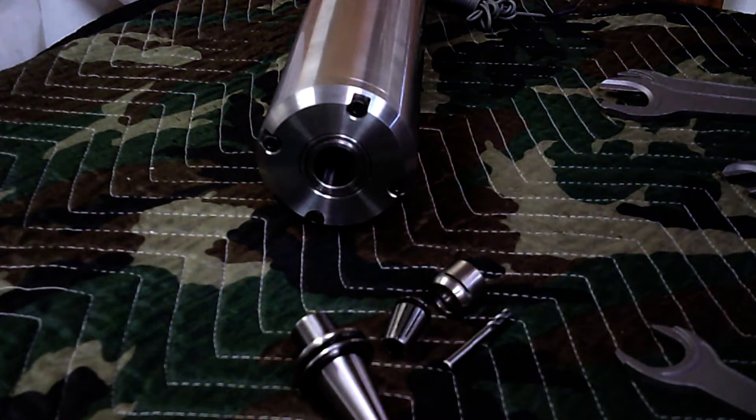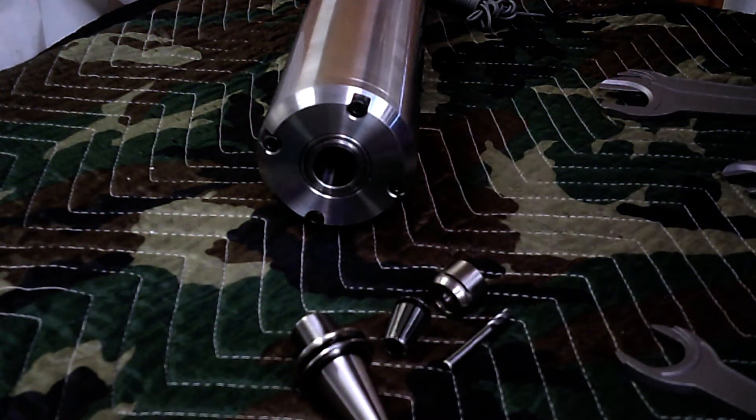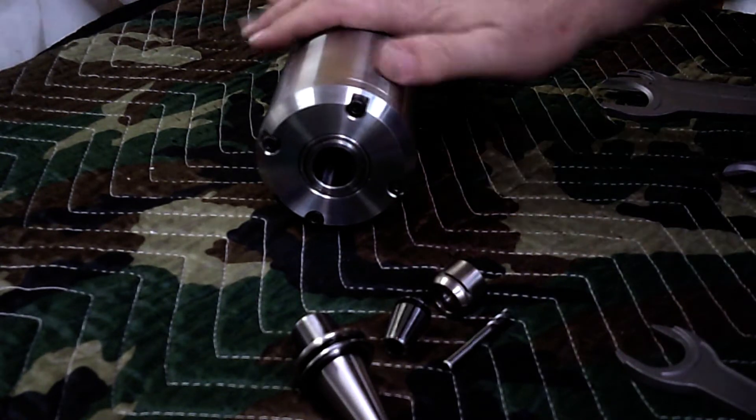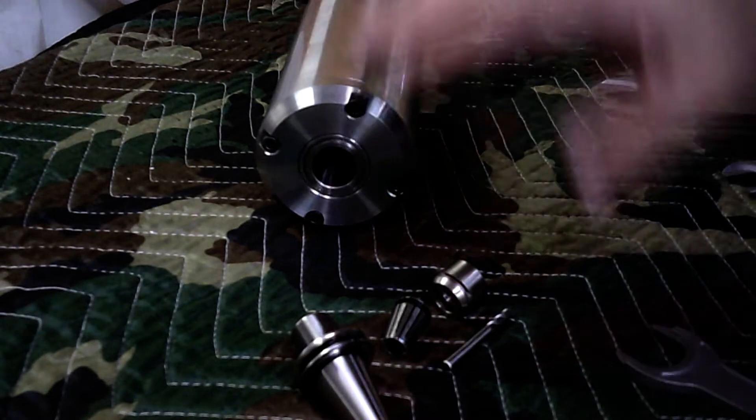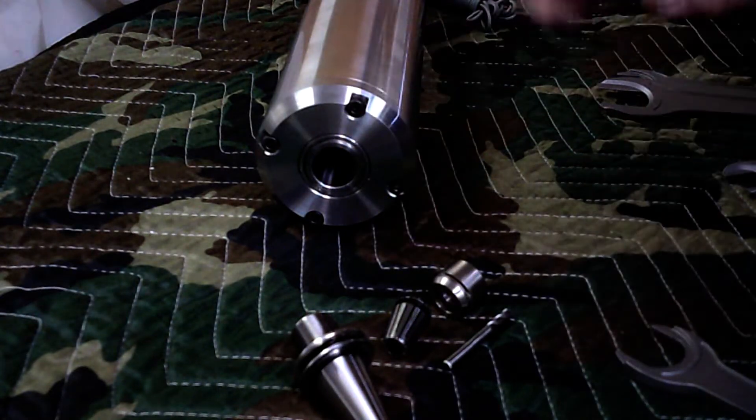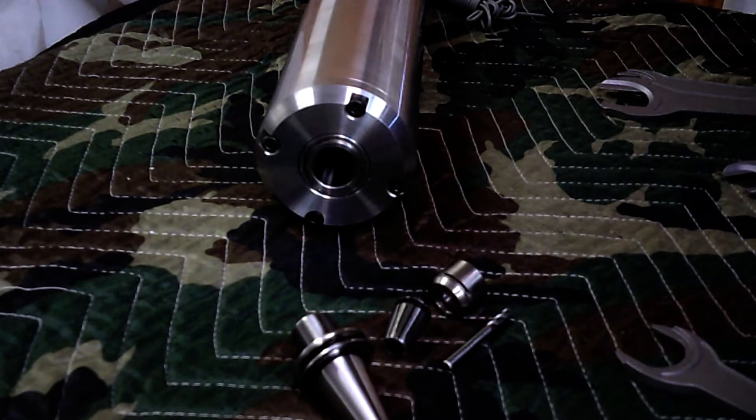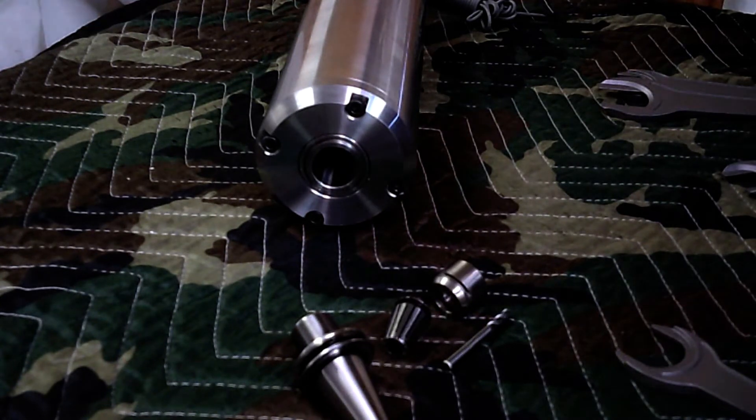Alright, I'm getting ready to swap out a 24,000 RPM spindle in one of my little high-speed mills with a similar speed and power spindle with a quick-change spindle nose. There are a couple of things I'm not sure about, but I'll tell you what I know.